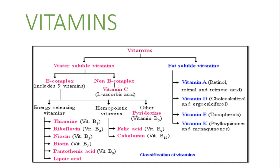Now, if we talk about the classification of vitamins, vitamins are divided into water-soluble and fat-soluble. Within water-soluble, there are two types: B-complex and vitamin C. In the B-complex group, there are nine vitamins.